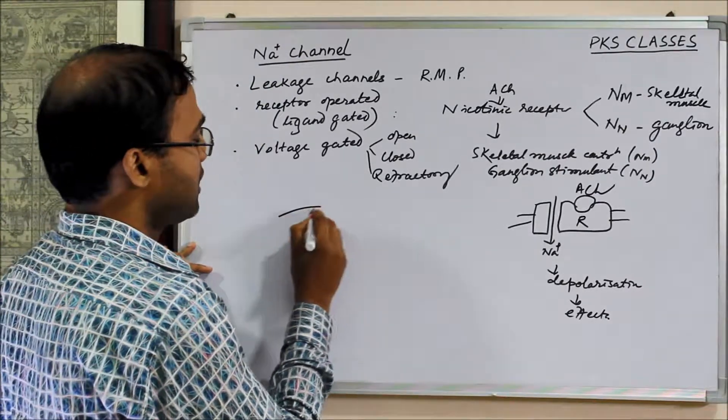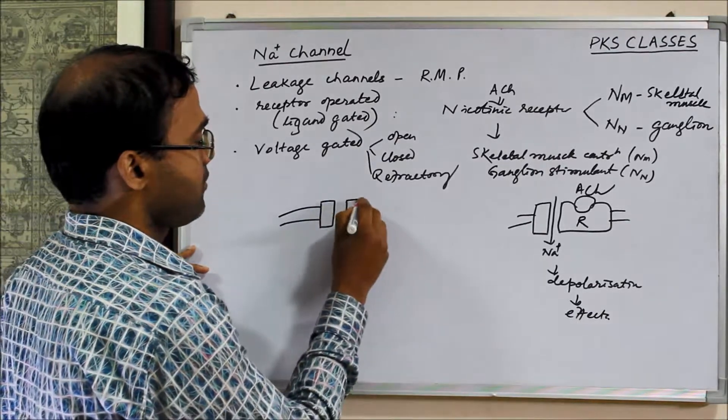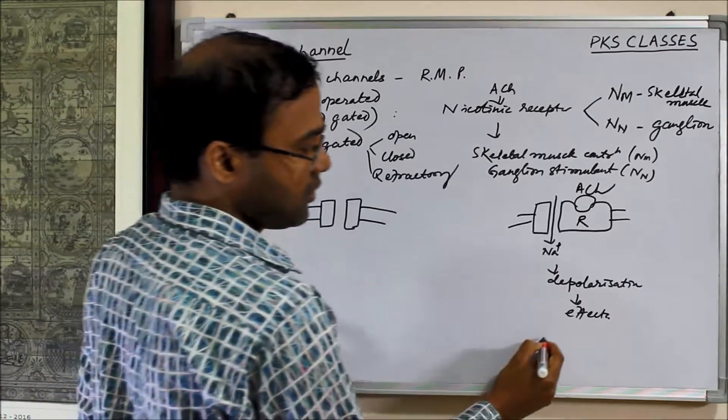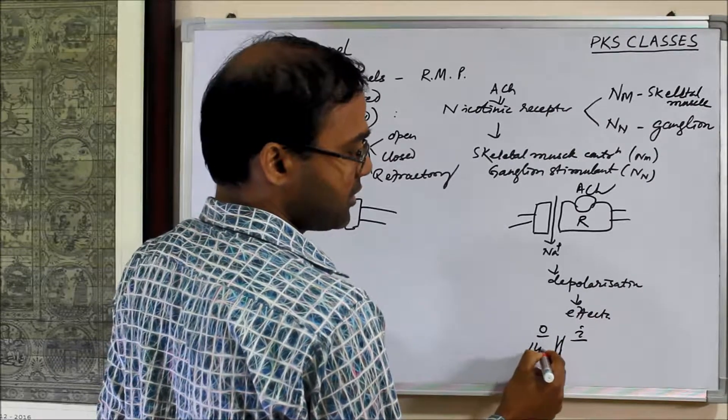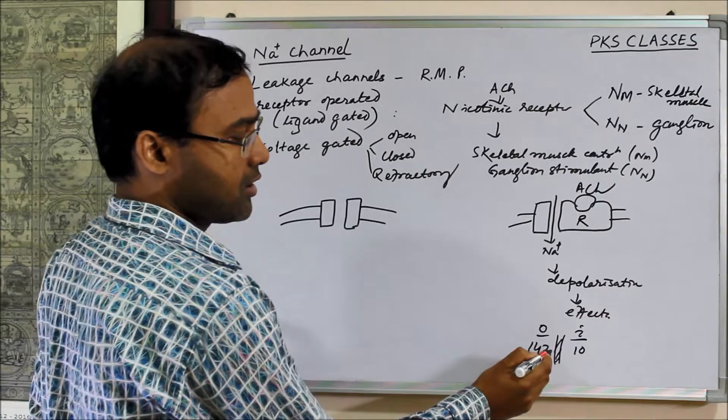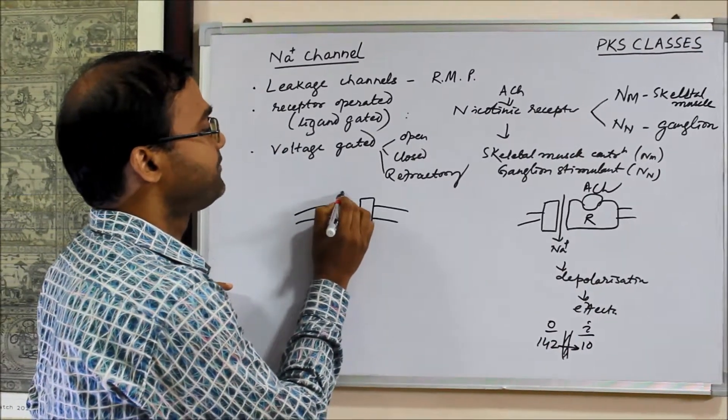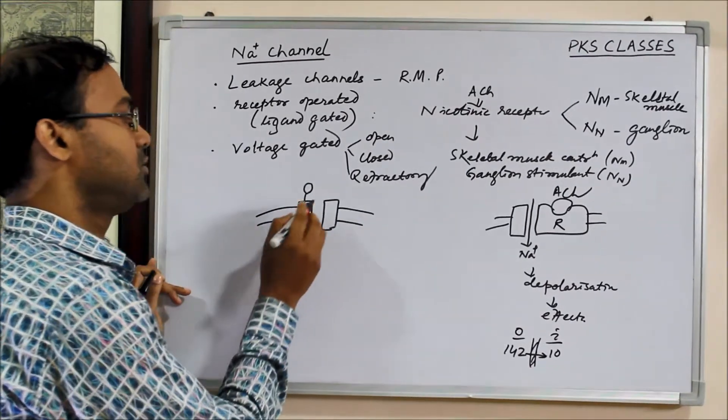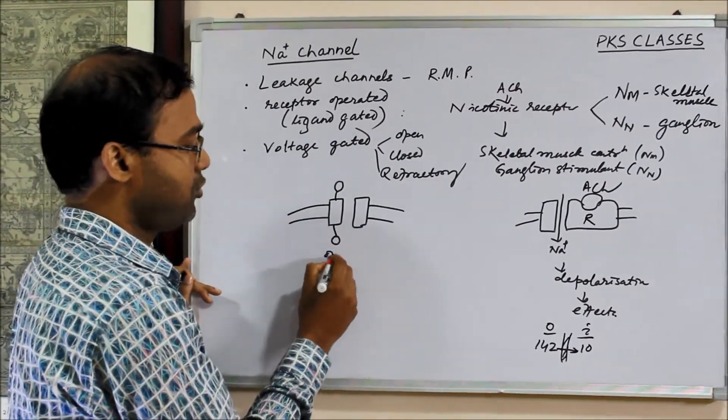Let us draw a diagram. Sodium channel, as we know sodium is present in the ratio of, suppose the cell membrane outside to inside, sodium is present in the ratio of 142 to 10. So sodium always enters inside from outside. This channel we can show two gates here. This is the outside gate, inside gate, both are open. This is the open state.